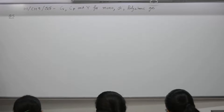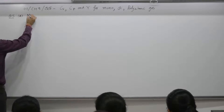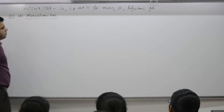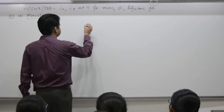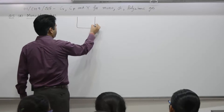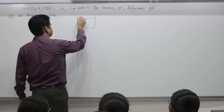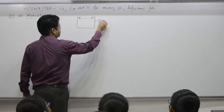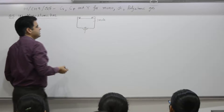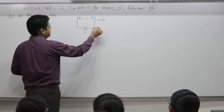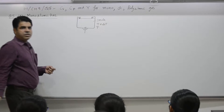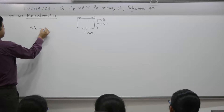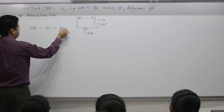We want a relationship. First part is for monoatomic gas. We will perform this experiment: take one mole of gas, supply some heat and increase the temperature from T to T plus delta T. Heat supplied is delta Q, which equals delta U plus work done — this is the first law of thermodynamics.